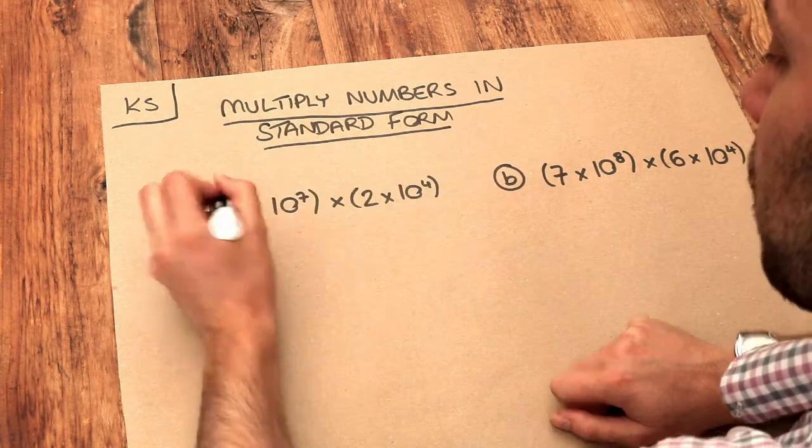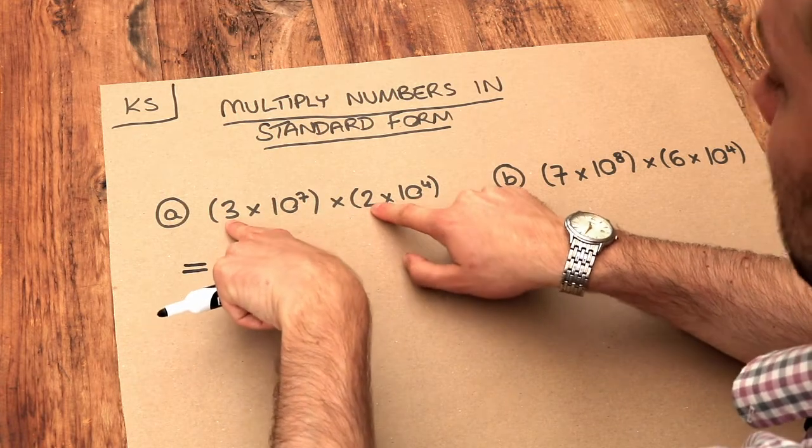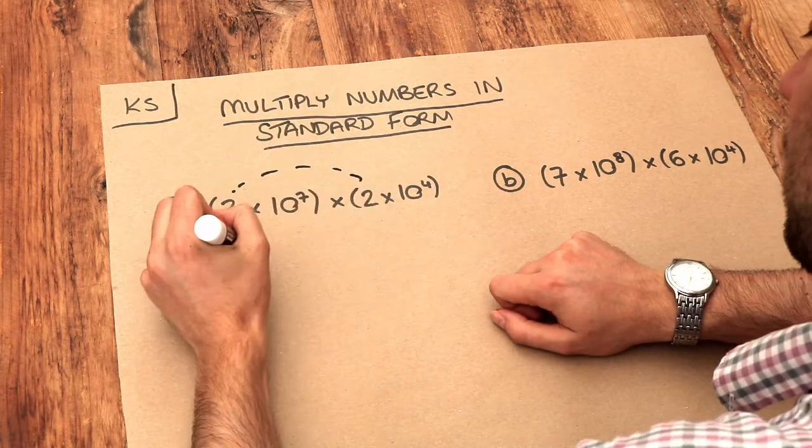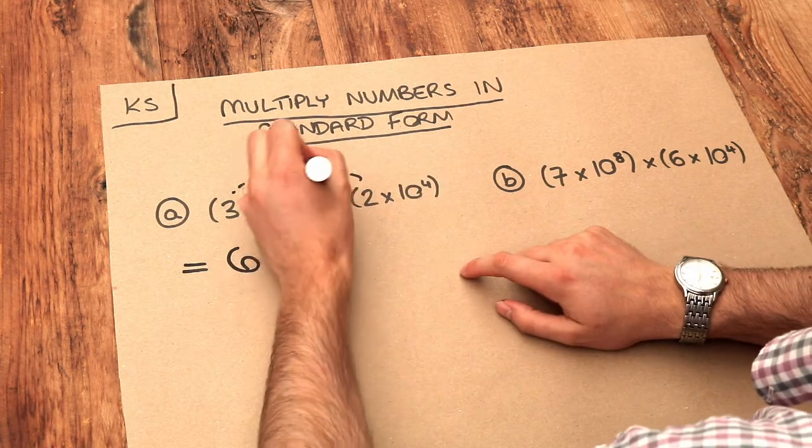So I advise multiplying the numbers in front of these powers of 10 first. So we could do the 3 times the 2 first because it's just one big multiplication, and the 3 times the 2 is 6, and then we've got these two things to multiply together.